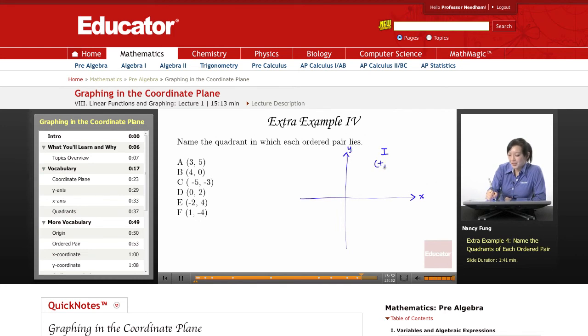Quadrant 1 is positive, positive. Quadrant 2 is negative, positive. Quadrant 3 is negative, negative. And quadrant 4 is positive, negative.